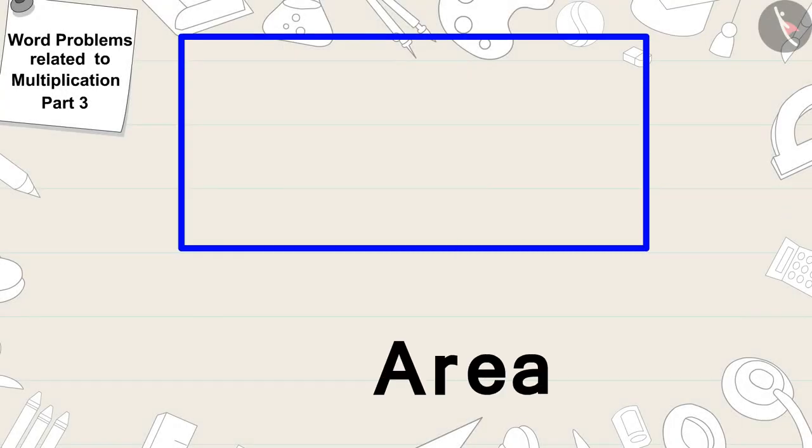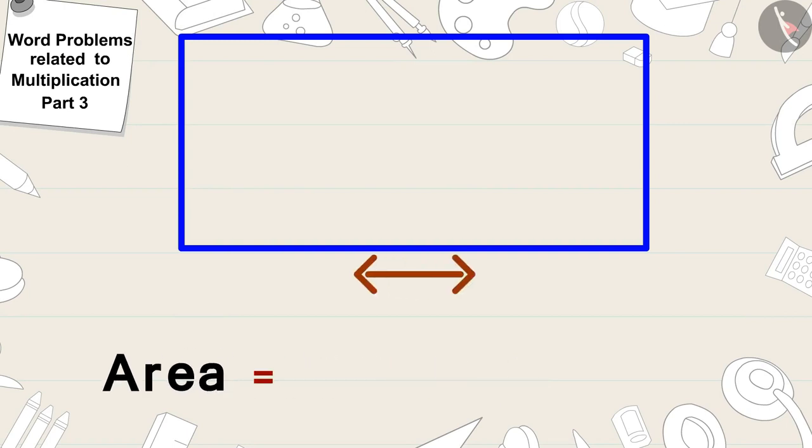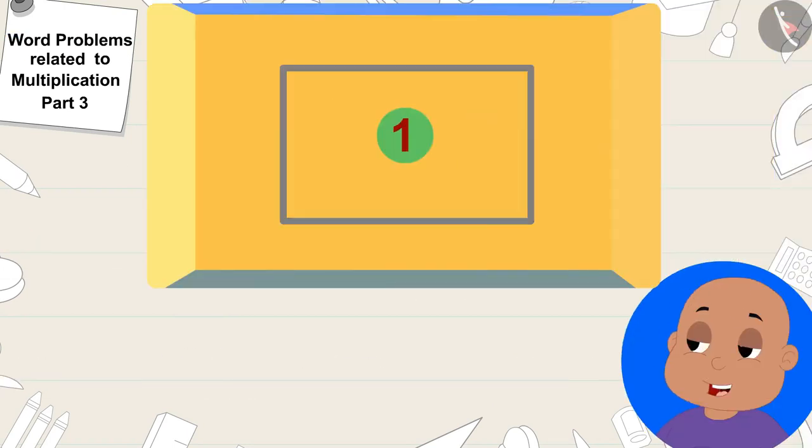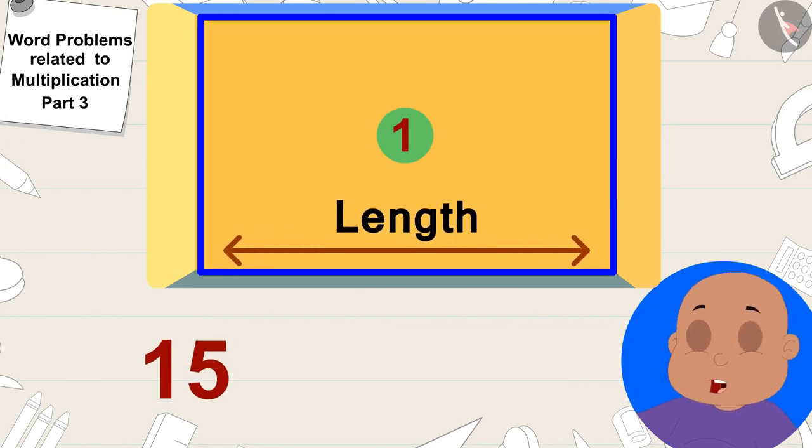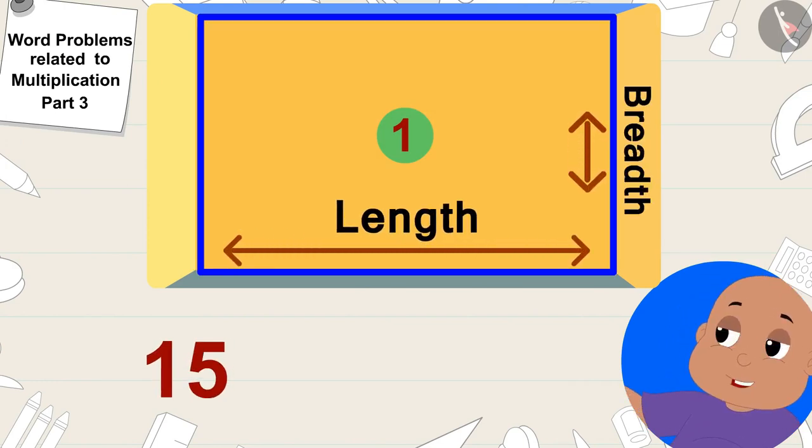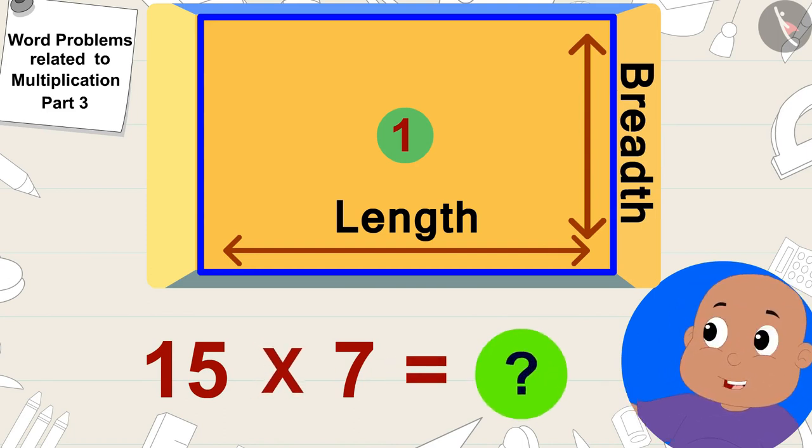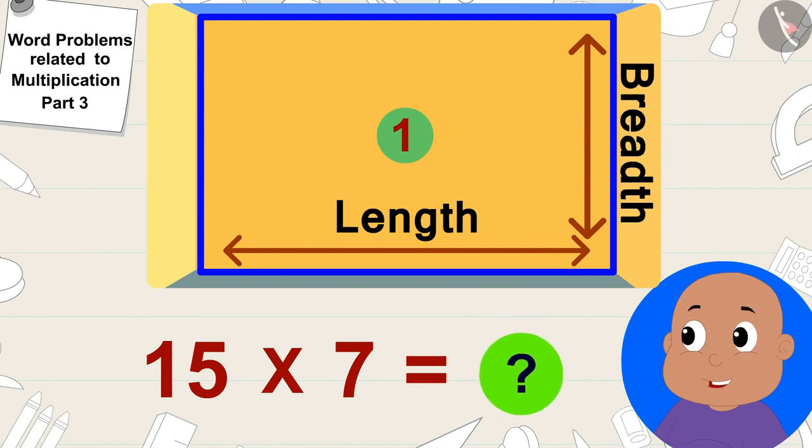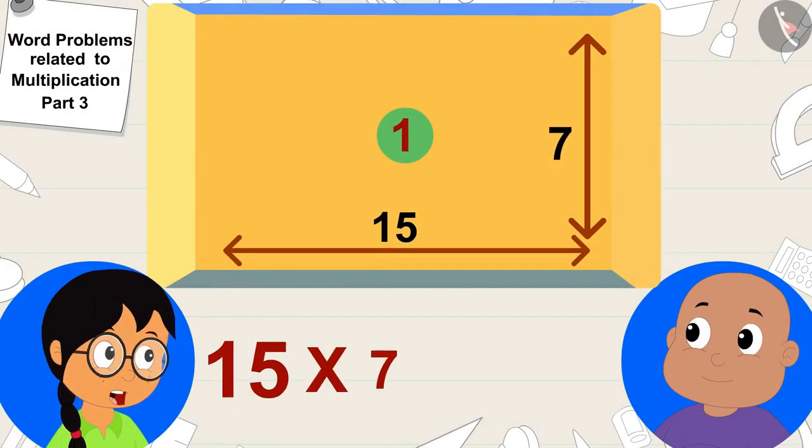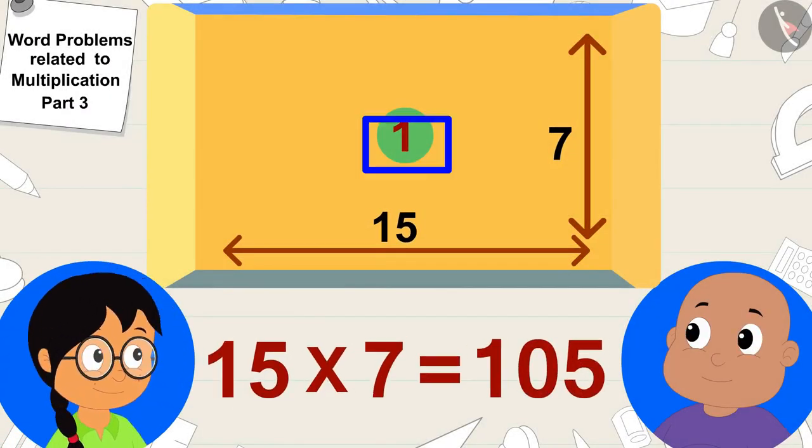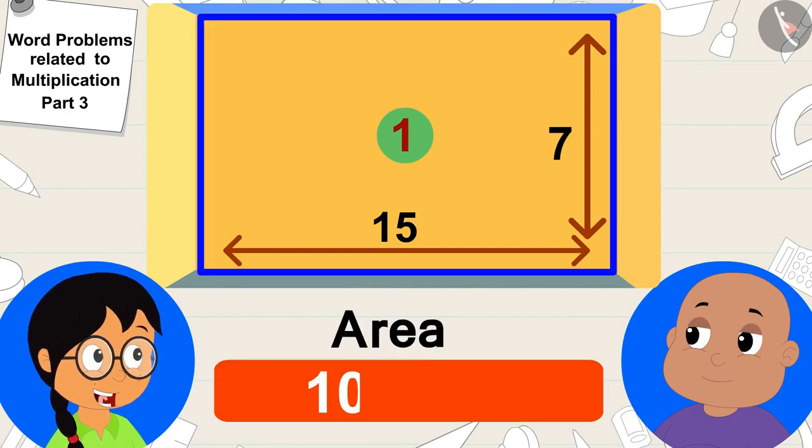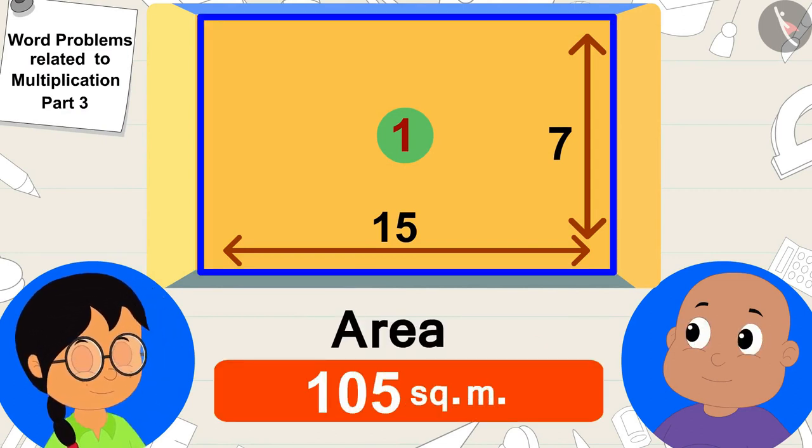To find the area of any rectangle we multiply its length by breadth. The length of this wall is 15 meters and breadth is 7 meters. Meenu, you are an expert in multiplication, quickly tell me how much is the area of this wall, Bablu asked Meenu. 15 times 7 will be 105. The area of this wall is 105 square meters, Meenu quickly multiplied and said to Bablu.